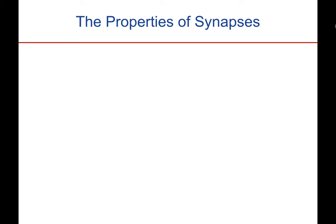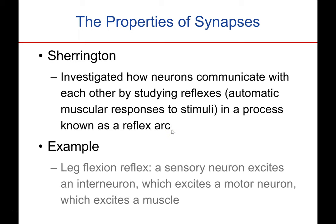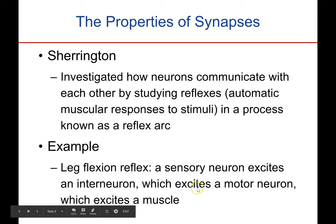Charles Sherrington investigated how neurons communicate with each other mainly by studying reflexes in animals. Reflexes are automatic muscular responses to stimuli — for example, pain or the patellar tendon reflex when your physician hits you underneath the kneecap and your leg kicks out. These are specifically spinal reflexes that occur along a reflex arc — the neural pathway from the sensation to the muscle itself. One example is the leg flexion reflex, a nociceptive reflex in response to pain where a sensory neuron excites an interneuron in the spinal cord, which in turn excites a motor neuron that carries that message out to the muscle telling it to contract.